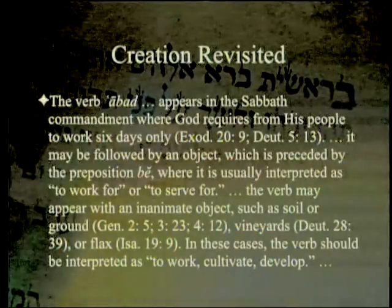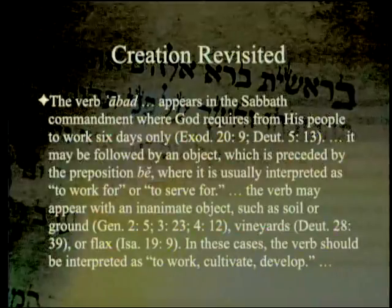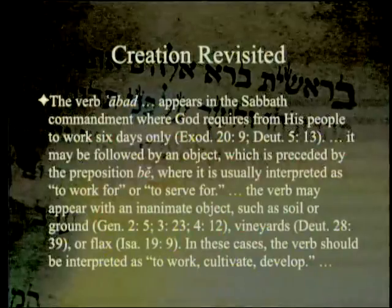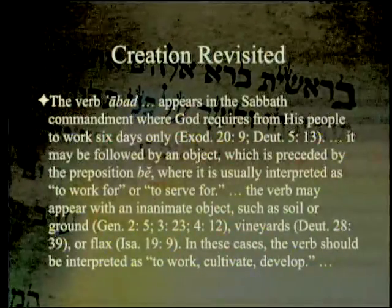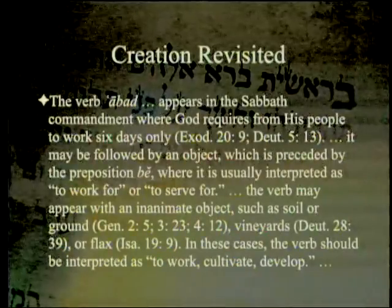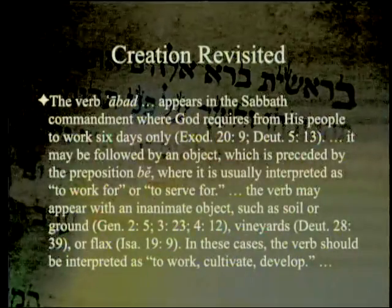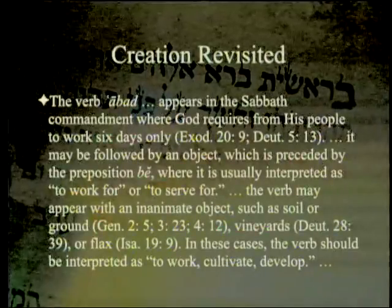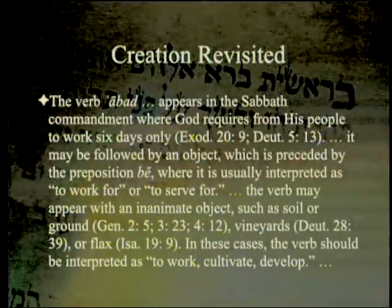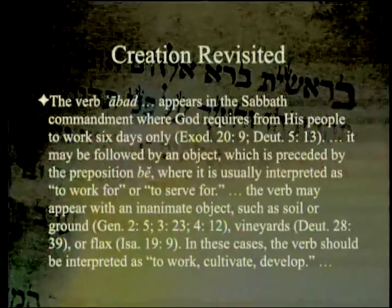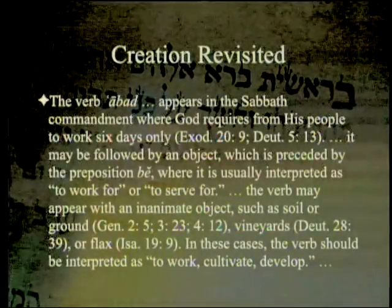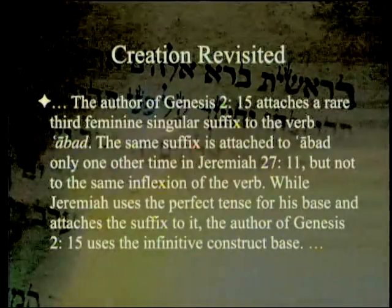The verb 'abad' appears in the Sabbath commandment where God requires his people to work — 'abad' — six days only. It may be followed by an object preceded by the preposition 'b' (in), and is usually interpreted as 'to work for' or 'to serve for' rather than 'to work in' or 'to serve in.' The verb may appear with an inanimate object such as soil or ground, vineyards, or flax — in these cases, interpreted as 'to work,' 'to cultivate,' 'to develop the ground.'